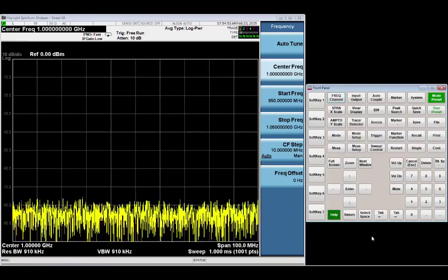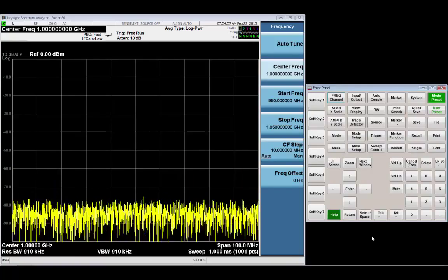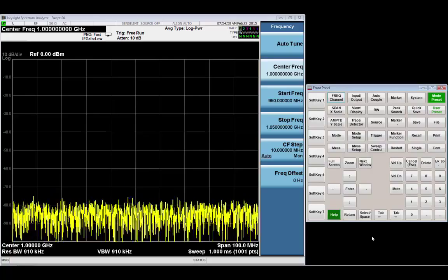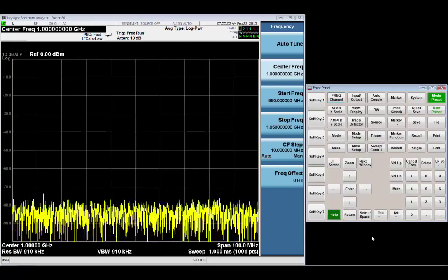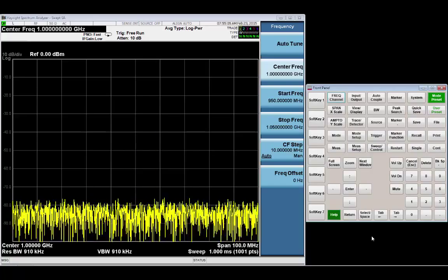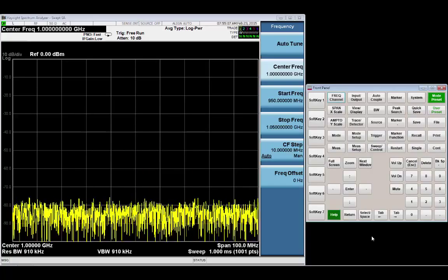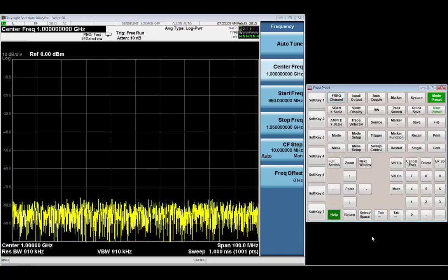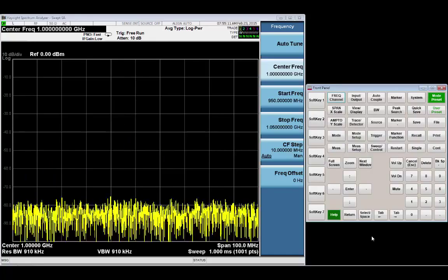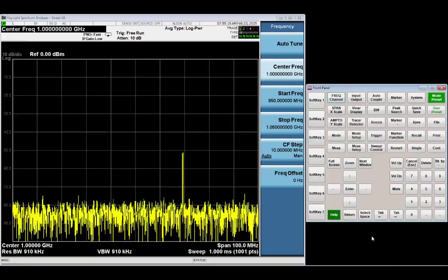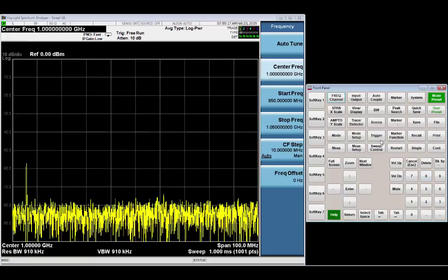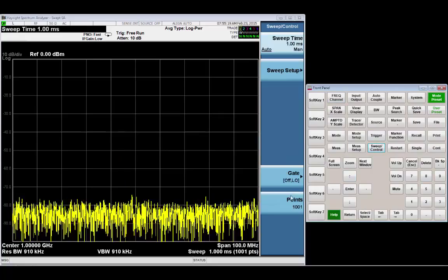With gated FFT, we can use resolution bandwidths that are much narrower, which will give us really good frequency resolution for a narrow pulse of only 4 microseconds. And I already have this set up for the carrier frequency, 1 gigahertz and a span of 100 megahertz. So let's go ahead and go right into the sweep controls and then the gate menu.